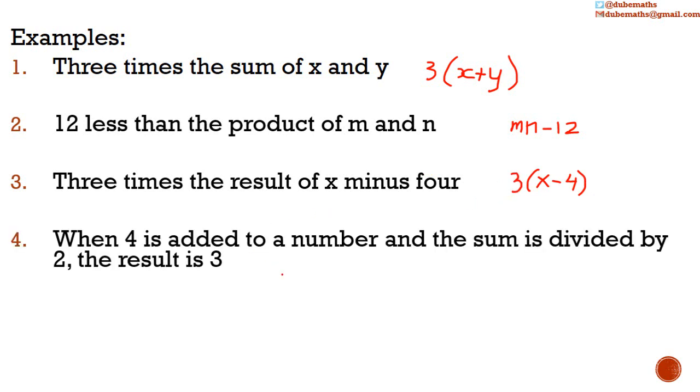A fourth example. When 4 is added to a number and the sum is divided by two, the result is three. So, 4 is added to an unknown number, x. And the sum, four plus x is divided by two, the result is three. That is to say, it's equal to three.